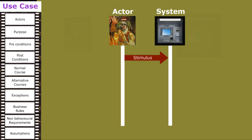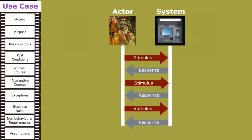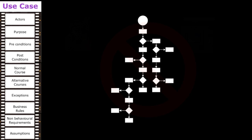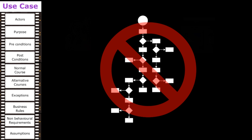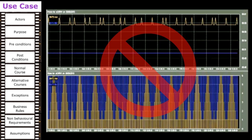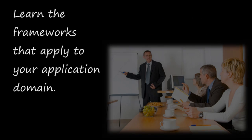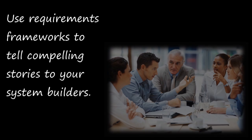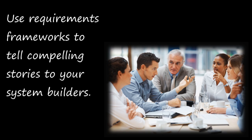The use case framework shines when you need to describe heavy interaction between a user and a system. It is not suited to describing complex algorithms, like the ones you find in automated stock trading — which isn't a problem unless you're a stockbroker. So the trick is to learn the frameworks that apply to your application domain, and use them to tell more compelling stories to the builders of your special machine.